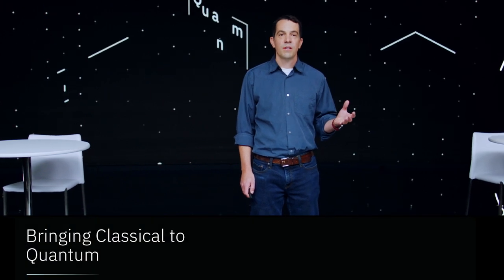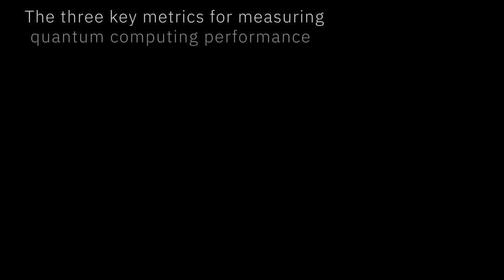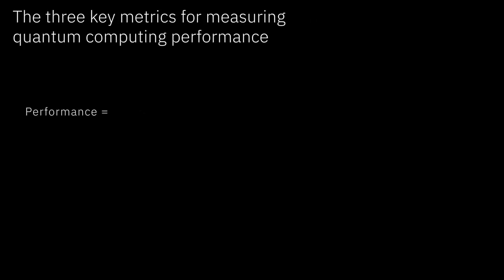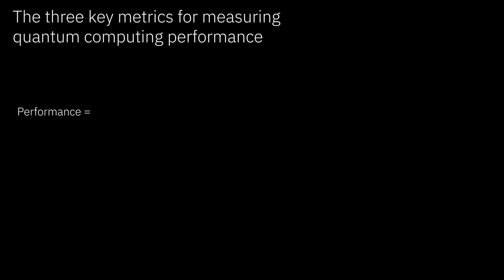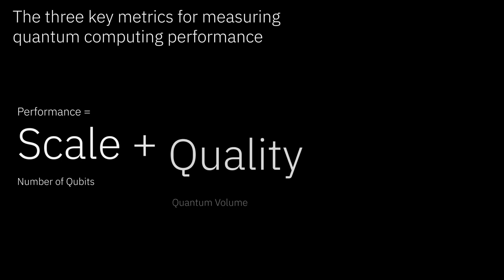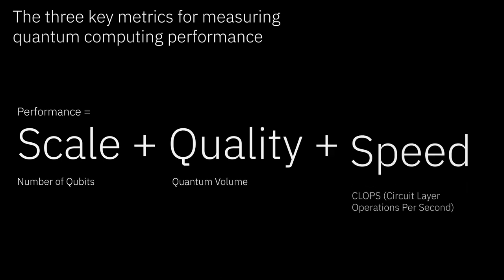Hi, I'm Blake Johnson and I'm the Quantum Platform Lead at IBM Quantum. Today I want to tell you about bringing classical to quantum. We're going to continue the story that Jay started when he introduced the three factors that determine quantum system performance: scale, quality, and speed.